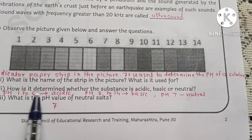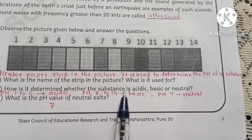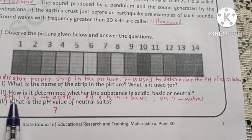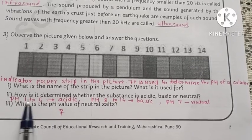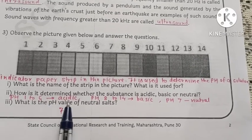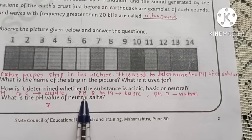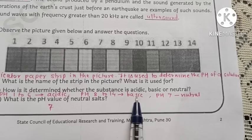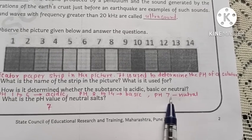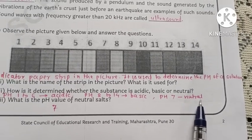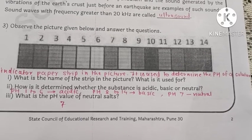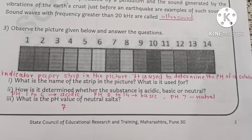Second: how is it determined whether the substance is acidic, basic, or neutral? If pH is between 1 to 6, the substance is acidic. pH between 8 to 14, the substance is basic. And pH is 7, the substance is neutral. What is the pH of the neutral salt? pH of the neutral salt is 7.